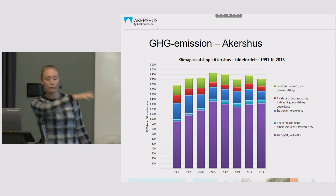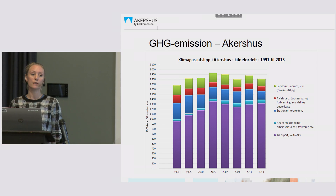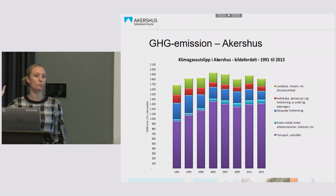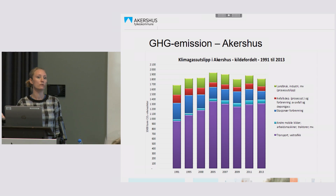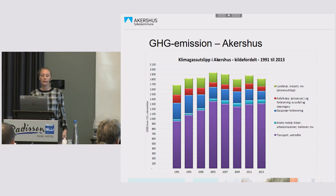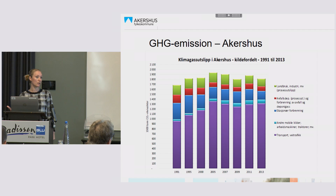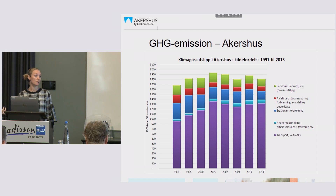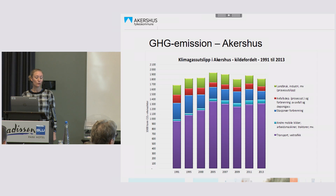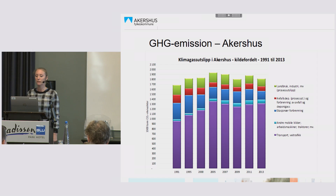The purple color is the transport sector. If you add the light blue, that's other mobile sources that use fossil fuels, like machinery using petroleum. The dark blue is stationary combustion — most of it from using fossil oil for heating in buildings, which is not allowed anymore, so that will go down by itself. The red one is methane gas from waste disposals; it's not allowed to dispose of organic waste in Norway anymore, so that will also go down. The stable green one at the top is agriculture — fertilizers and cows.